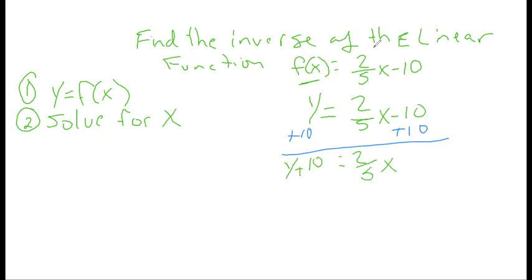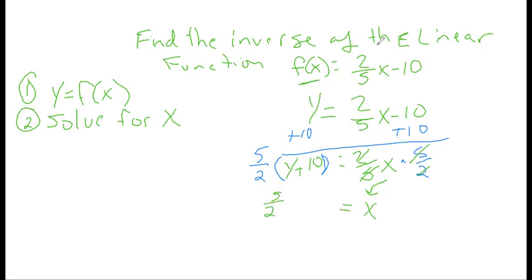Now I'm going to get rid of that fraction of two-fifths, and in order to do that I'm going to use the reciprocal — I'm going to multiply by five over two on both sides. When I do that to the whole left side, I need to put it in parentheses: five over two times the quantity in parentheses. The five and the five on the bottom cancel, the two and the two also cancel, and we're left with just x on the right side.